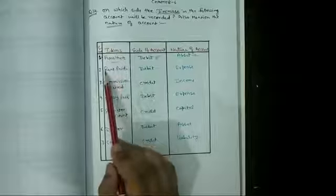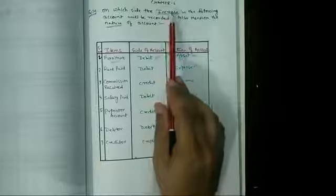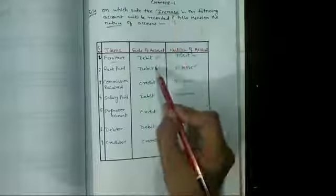Second one is rent paid. Rent paid हम कर रहे हैं, हमारा क्या है? Expense. अगर expense हमारा increase होता है तो it will also be debit.